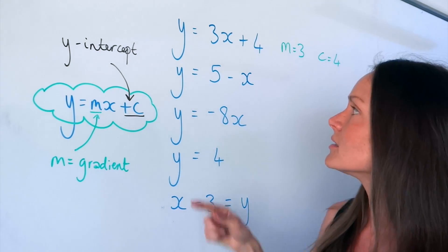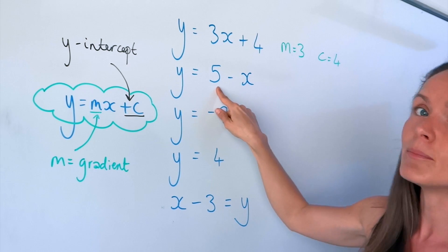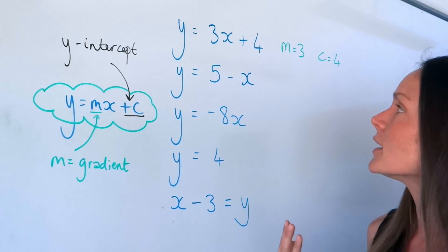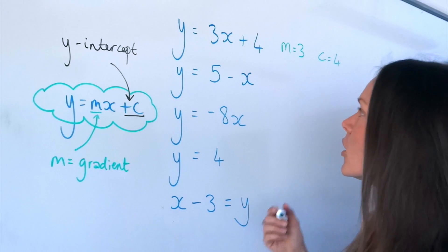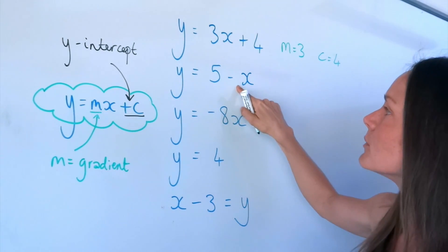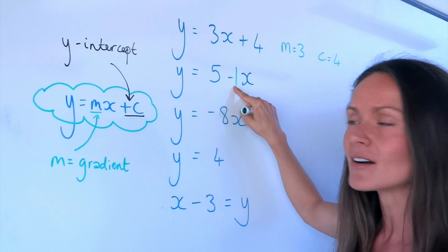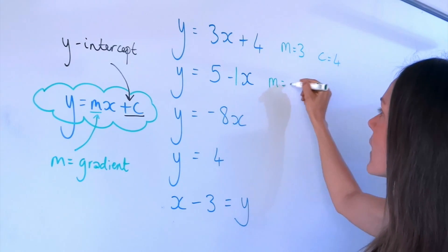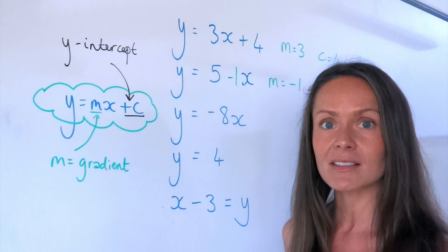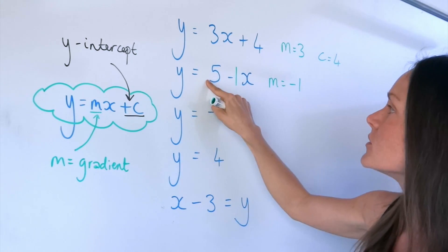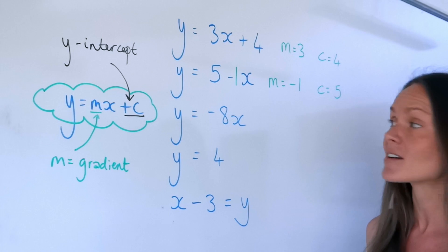In this one, it still says y equals, which is good, but the x is on one side and the number is on the other. Remember, to find m you need the number in front of the x. There isn't actually a number in front of the x here — you have to remember there's an invisible 1. So the gradient is in fact minus 1. And the y-intercept, the number by itself, is positive 5.